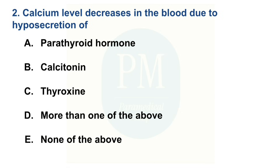Calcium level decreases in the blood due to hyposecretion of: Option A: Parathyroid hormone. Option B: Calcitonin. Option C: Thyroxine. Option D: More than one of the above. Option E: None of the above. The correct option is Option A — Parathyroid hormone.